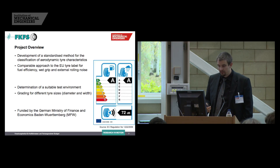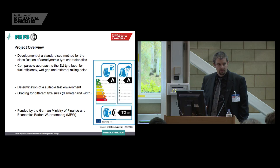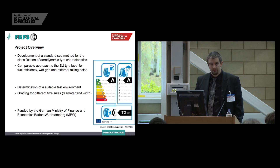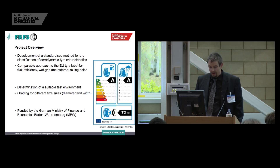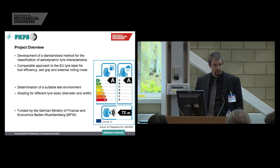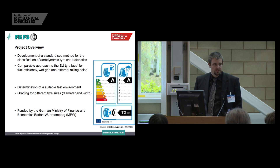This means we have to determine a suitable test environment, if possible independent from the vehicle, so that we don't have to use the full-scale wind tunnel in the best case. We also have to come up with a grading for different tire sizes. Because if we compare a 14-inch tire, which is very narrow, to a 20-inch tire, the drag of the 20-inch tire is of course much higher than for the smaller one. So there has to be a grading which is more or less independent from the tire size.